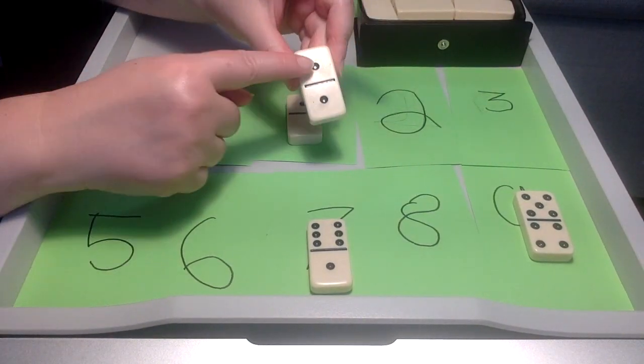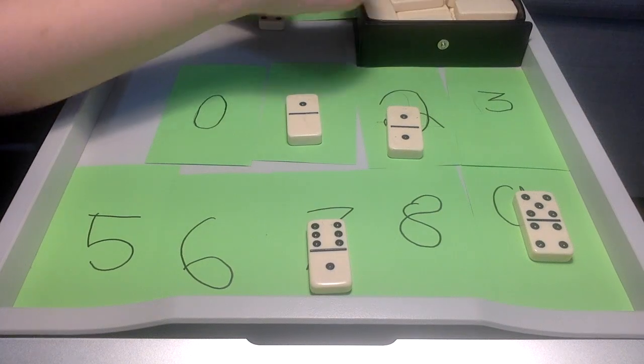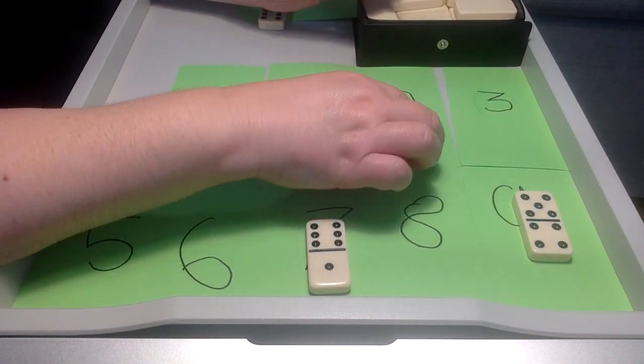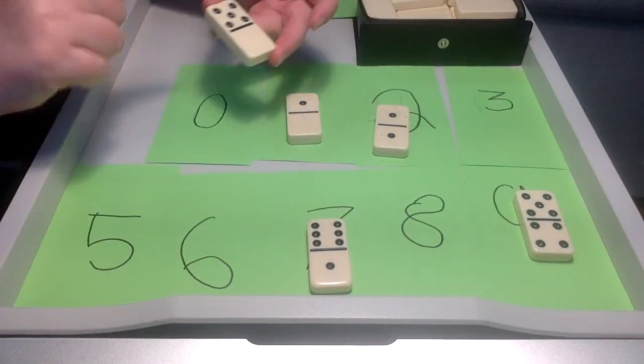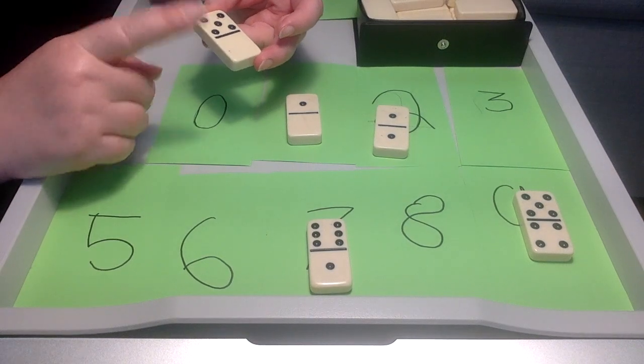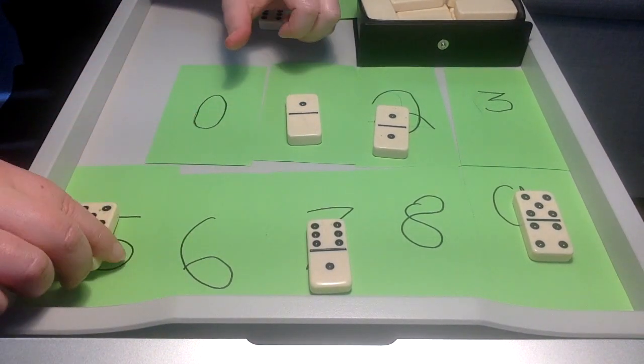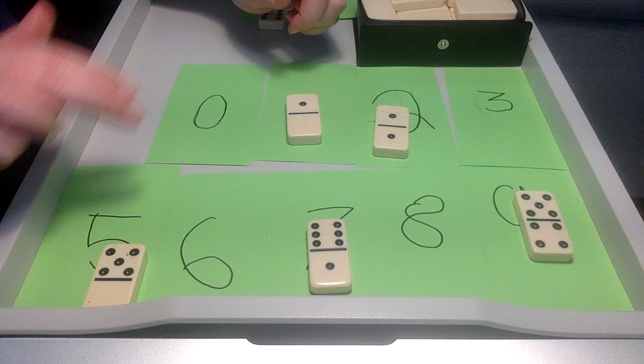And here we have 1 and 1 is 2. And I prompt kids sometimes, what's 1 and 1? It's 2. Oh look, you have, what's this? 5. 5 and what? 5 and 0. What happens when we add a 0? So these are some of the questions you can ask students.